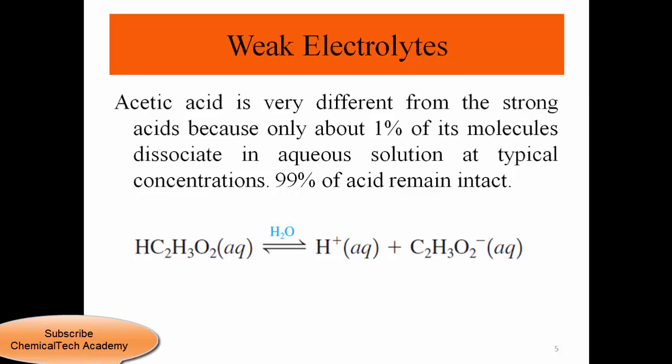As you can see here, acetic acid converts to a proton plus the acetate ion. After equilibrium, this dissociation accounts for only 1% of the total amount of acetic acid in solution. So after equilibrium we have 99% undissociated acetic acid and only 1% ionized — a very small degree of dissociation.